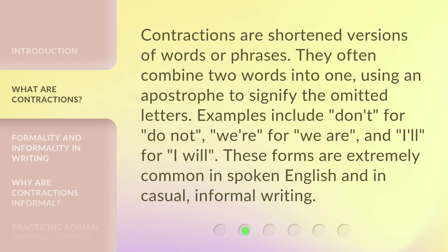Contractions are shortened versions of words or phrases. They often combine two words into one, using an apostrophe to signify the omitted letters. Examples include: 'don't' for 'do not', 'we're' for 'we are', and 'I'll' for 'I will'. These forms are extremely common in spoken English and in casual, informal writing.